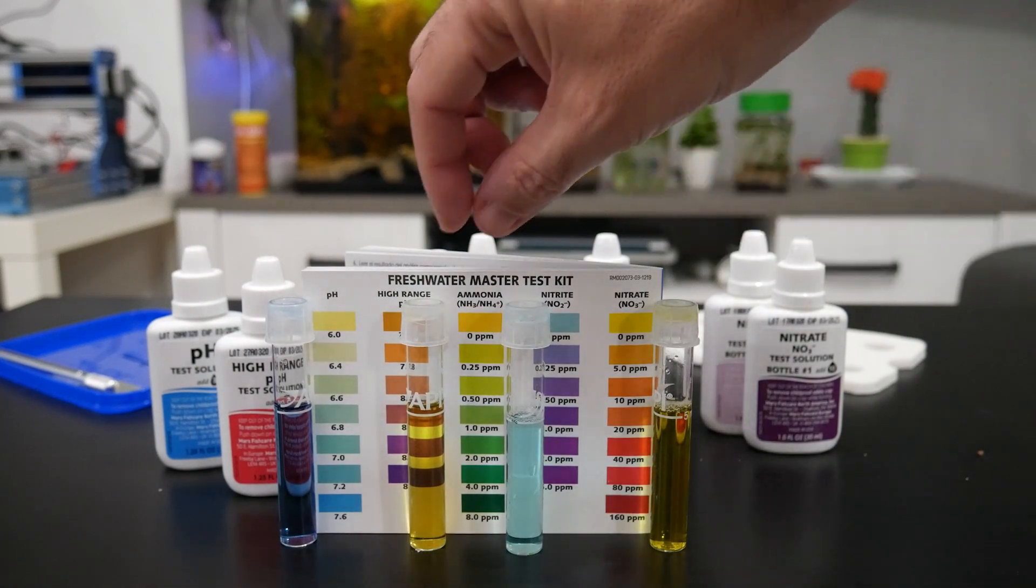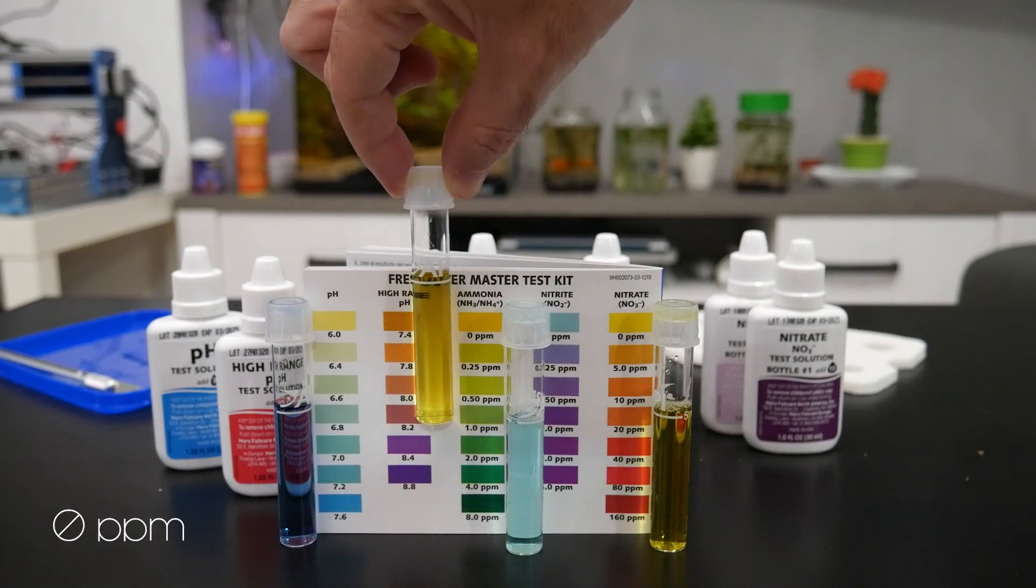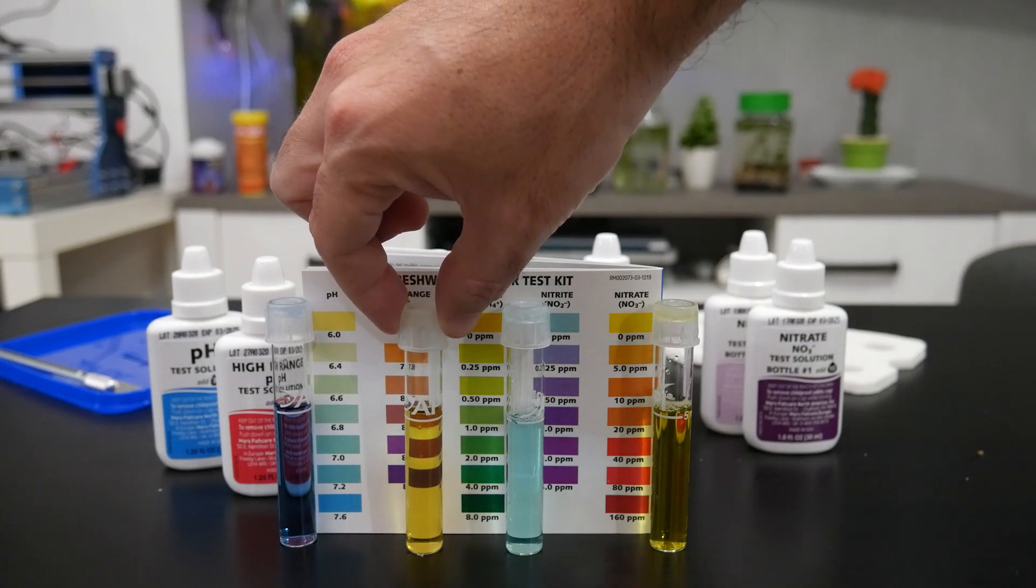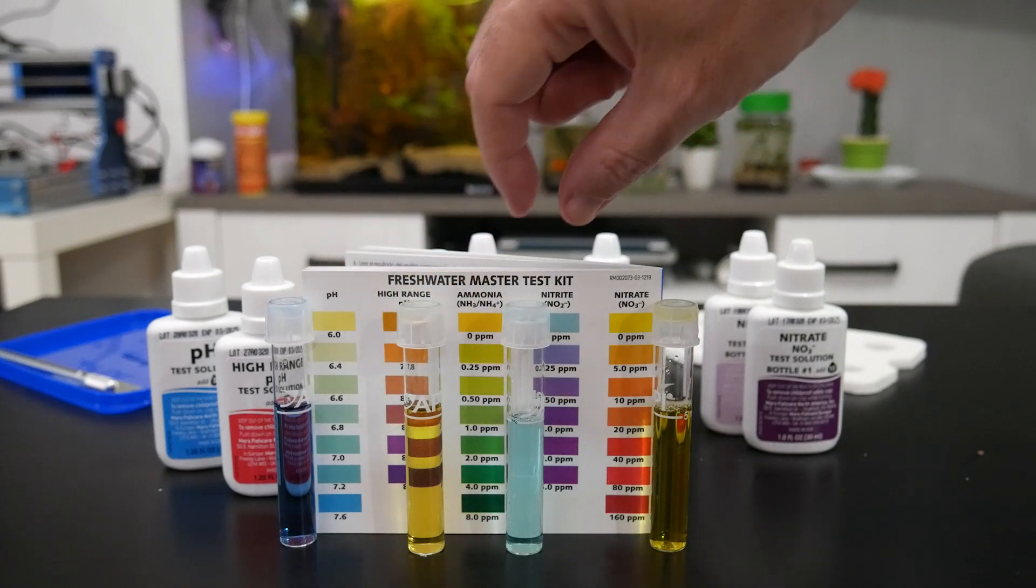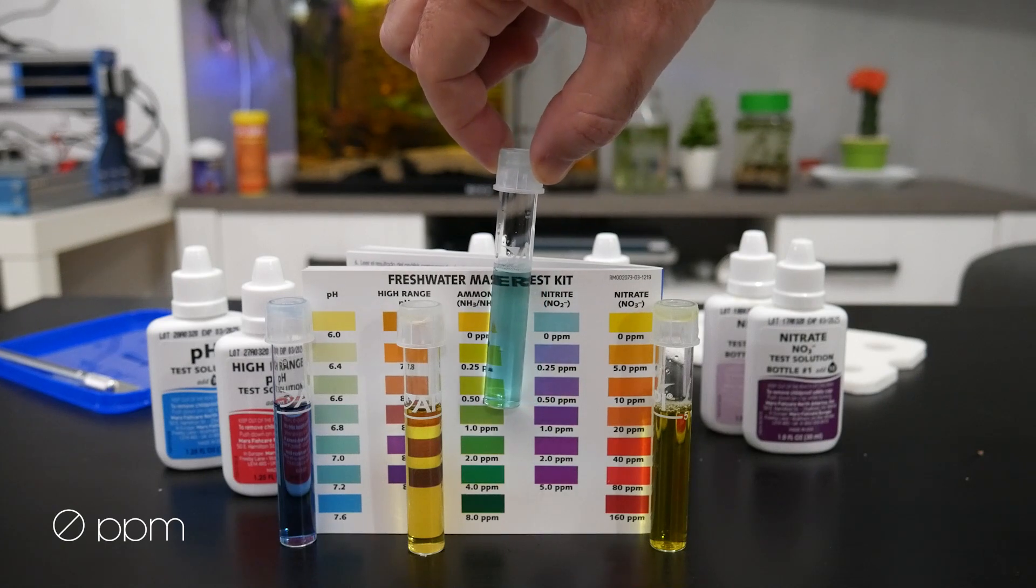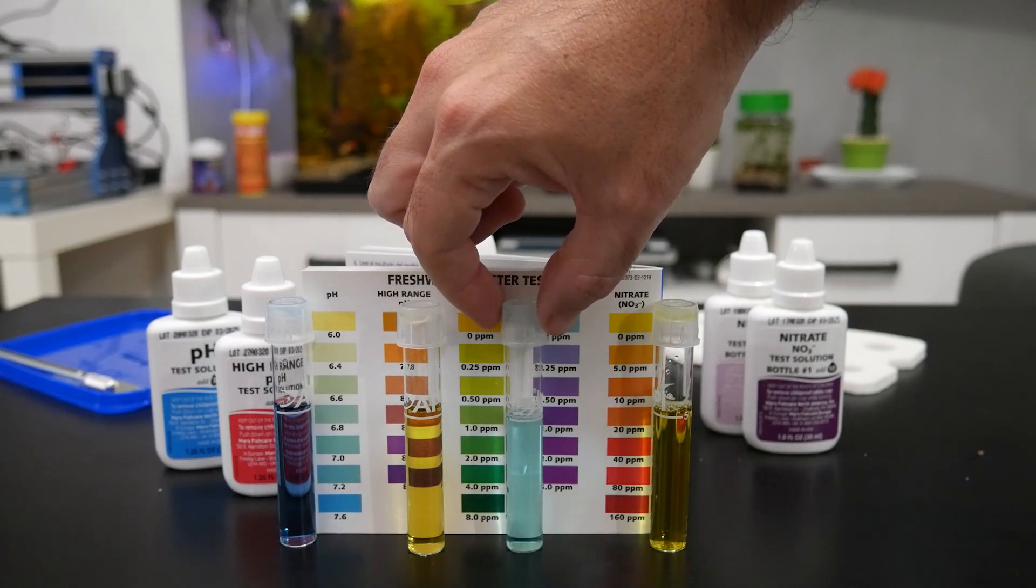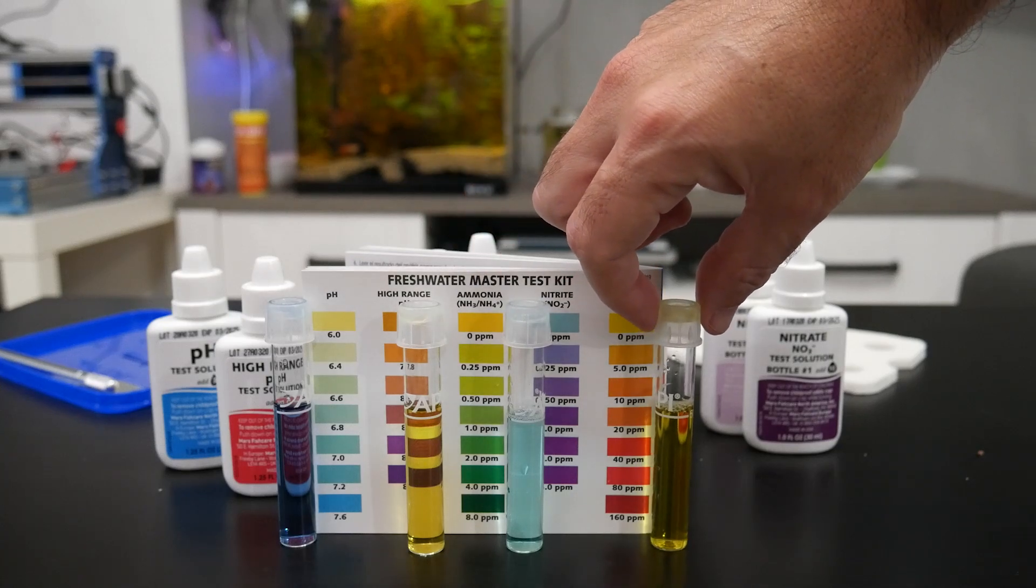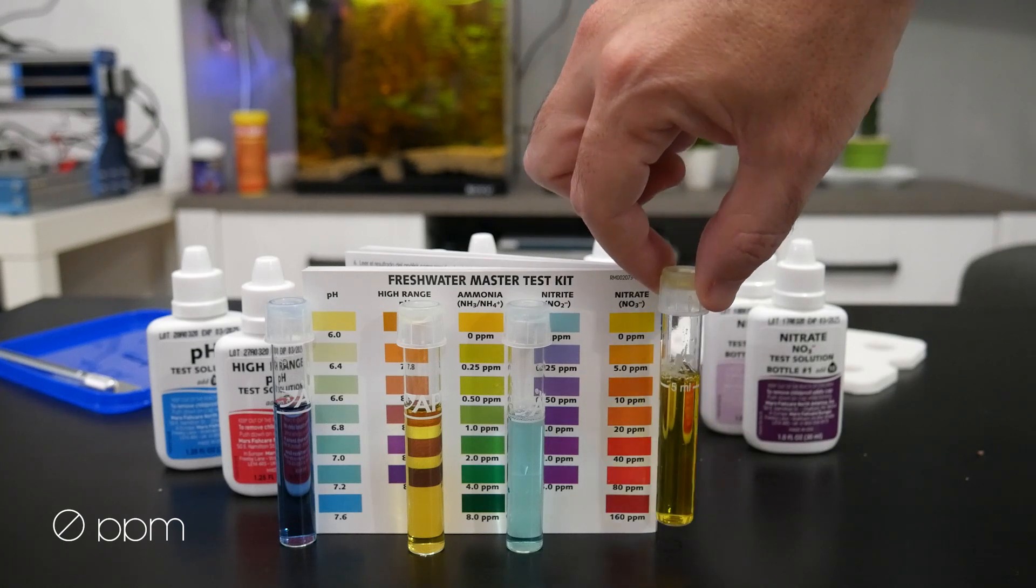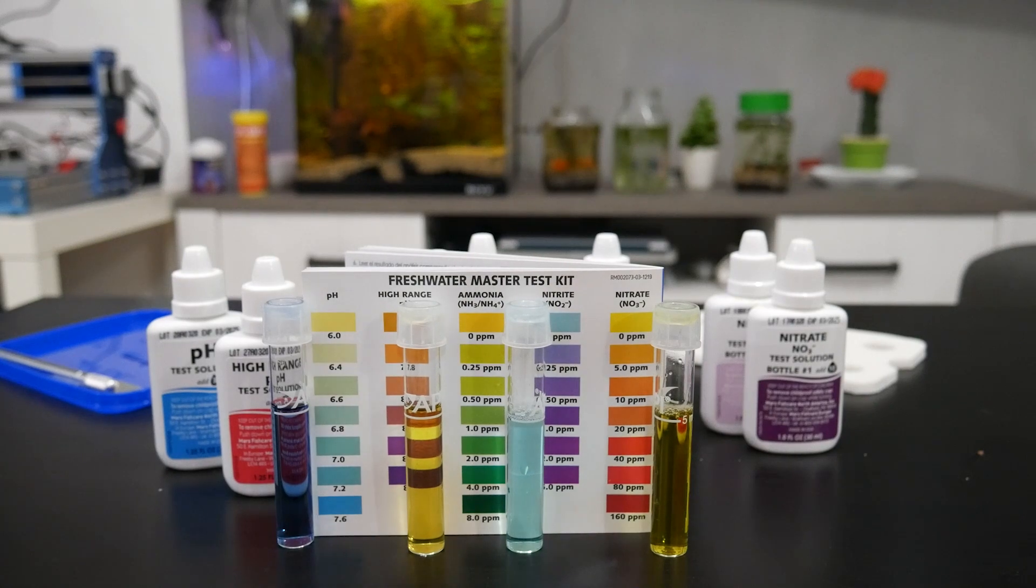The next one is ammonia. We can see that it's yellow. That is good. We don't have ammonia in the aquarium. Next one is nitrite, also zero. This is good. And the last one is nitrate, also zero. This is good. This is a quite new aquarium and we have a lot of plants, so the values are okay.